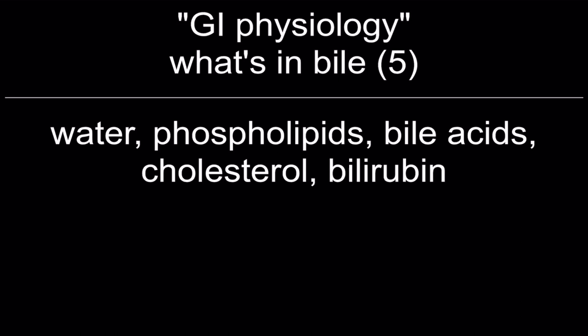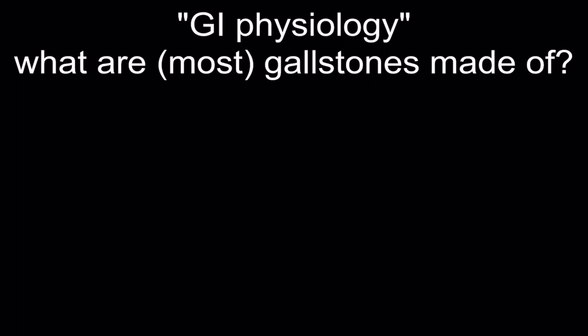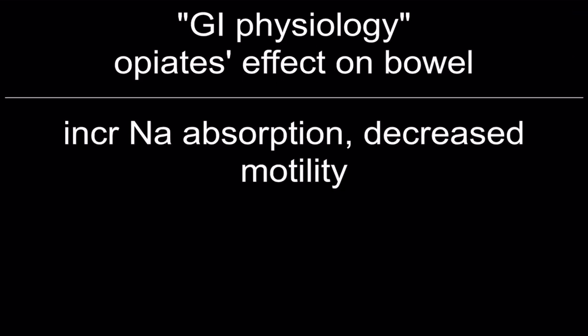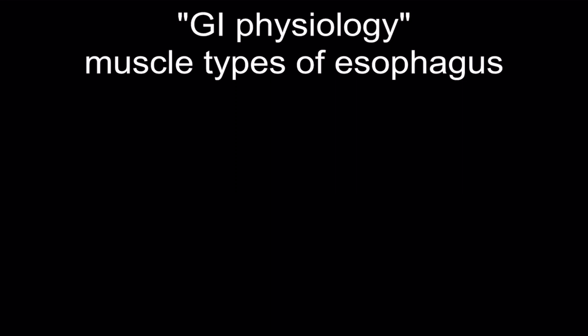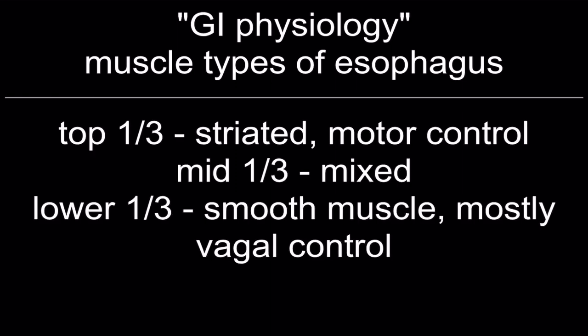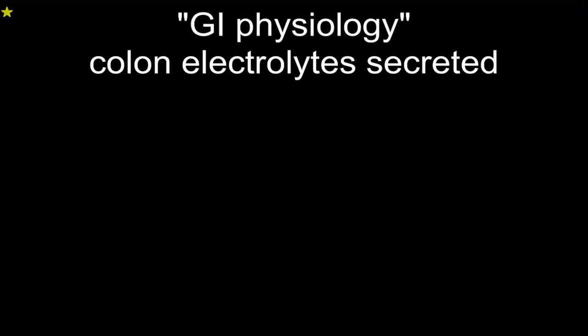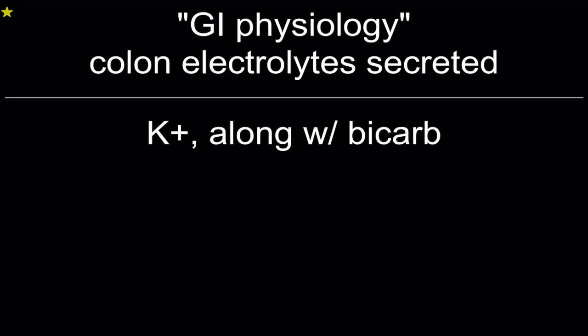What's in bile: water, phospholipids, bile acids, cholesterol, and bilirubin. Most gallstones are made of cholesterol. Opiates' effects on the bowel: increased sodium absorption and decreased motility. Muscle types of the esophagus: top one-third is striated (motor control), mid one-third is mixed, lower one-third is smooth muscle (mostly vagal control). Electrolytes absorbed by the colon: sodium and chloride. Electrolytes secreted by the colon: potassium and bicarb.